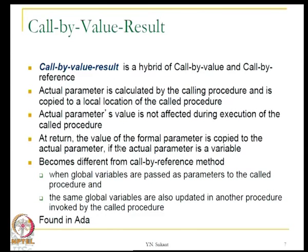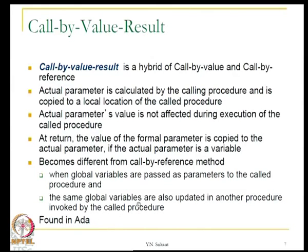How can call by value-result differ from call by reference? Suppose you have global variables passed as parameters to the called procedure, and the same global variables are also updated in another procedure invoked by the called procedure. For example, A calls B, B gets these global variables as parameters, but then B calls C and C changes the global variables directly. The effects on the global variables can then be very different. This mechanism is found in the ALGOL language.